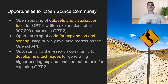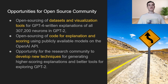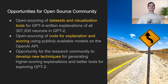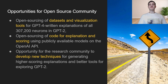So with this all in mind, what are some opportunities for the open source community to get involved? OpenAI open sourced the datasets and the visualization for all 307,200 neurons of the GPT-2 XL model. They also open sourced all the code for the explanation and scoring using publicly available models on the OpenAI API. There's an opportunity for the open source community to start working with these tools and coming up with ways to improve the explainability of neurons overall.